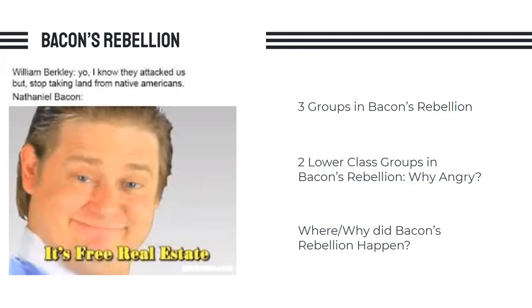These lower class frontiersmen asked for help from the colonial government — the elites — but the elites refused to fight the Natives. So the poor frontiersmen were struggling to survive without any help from the government. Bacon was able to capitalize on this and helped lead this rebellion of the people. Not only were the frontiersmen mad, but the lower class people living throughout the colony were mad as well, because none of them were having their voices heard and they were the ones being taken advantage of. So Nathaniel Bacon was able to unite them together.